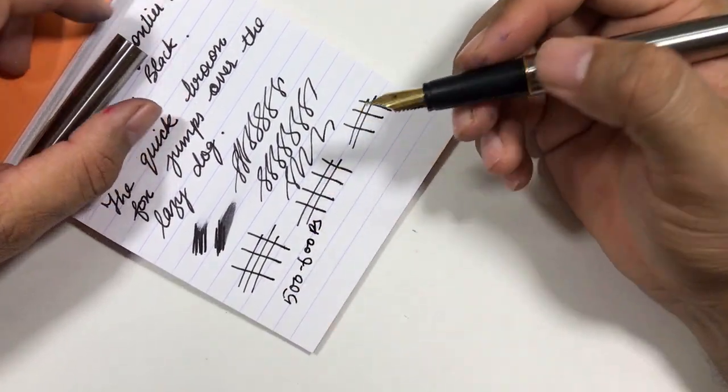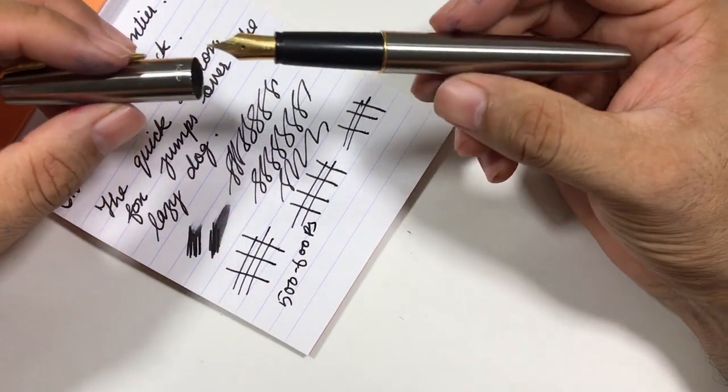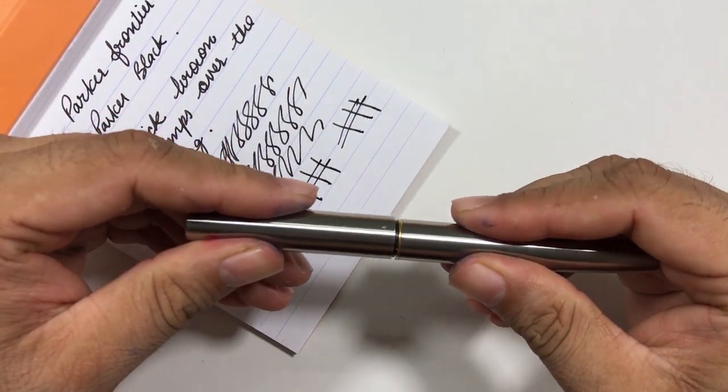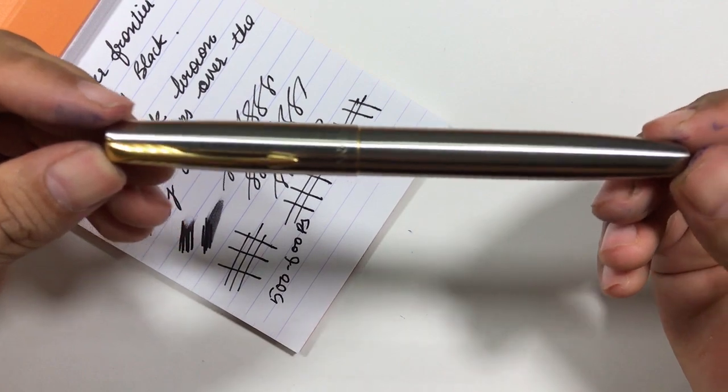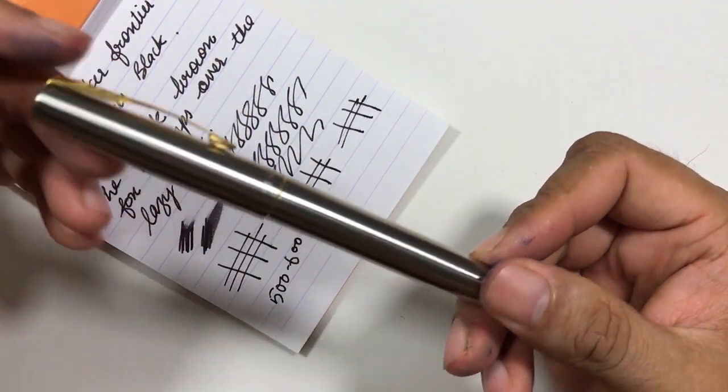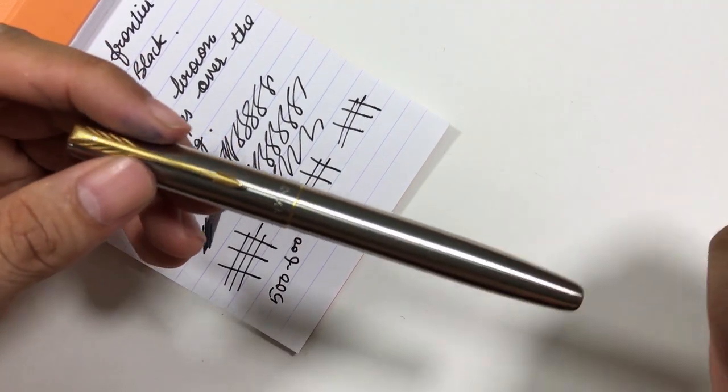Otherwise, for the price range of 500 to 600 rupees, or around 8 to 10 dollars, you get a workhorse pen which never lets you down. This is a very good pen for college students, for office-going people who tend to write more with the pen basically.